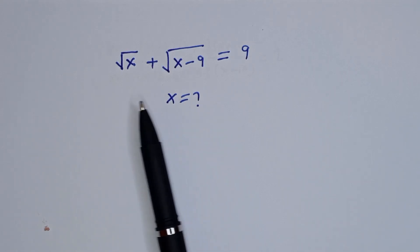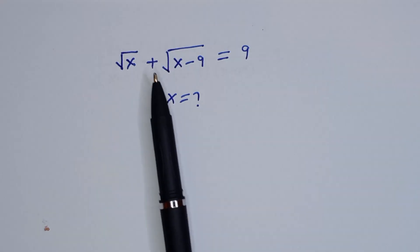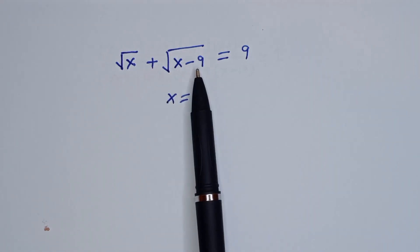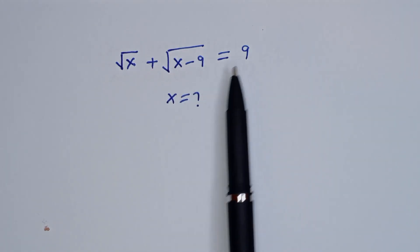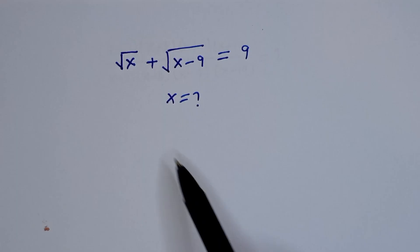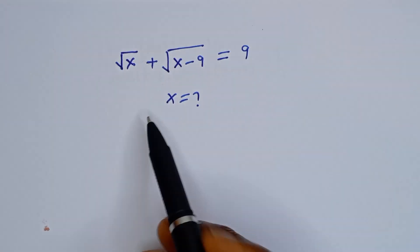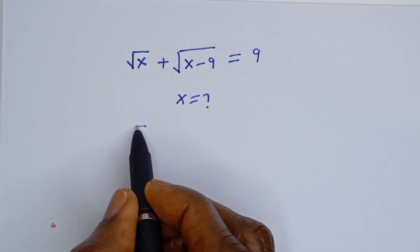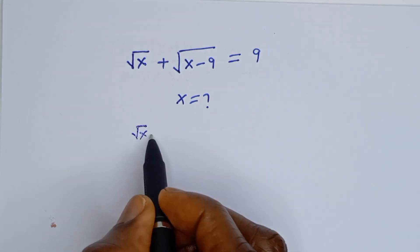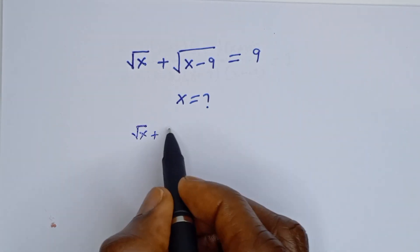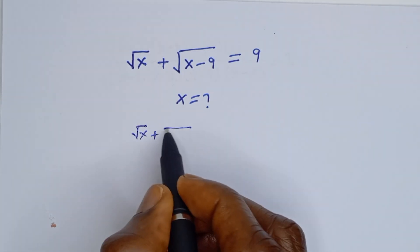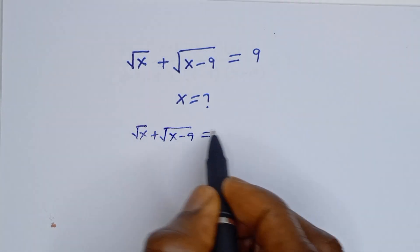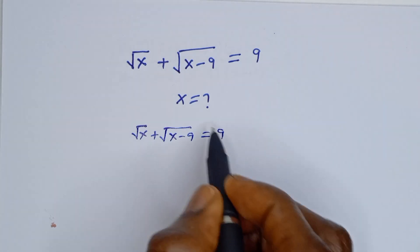Hello. How to solve for s from this equation: square root of s plus square root of s minus 9 is equal to 9.